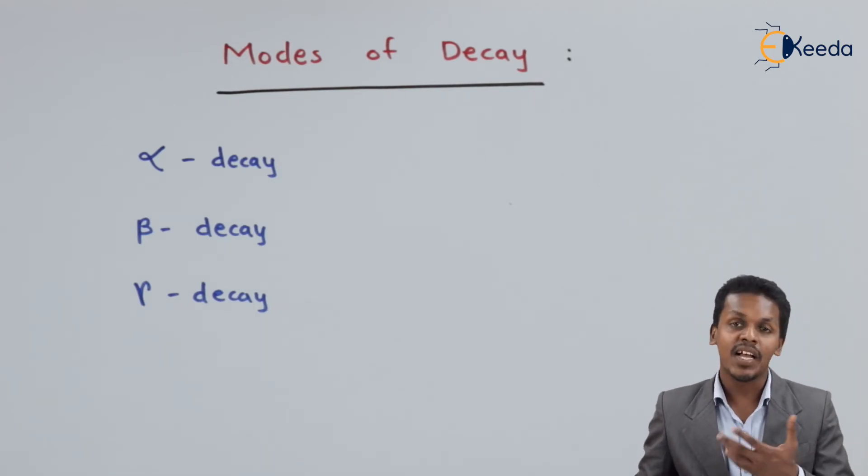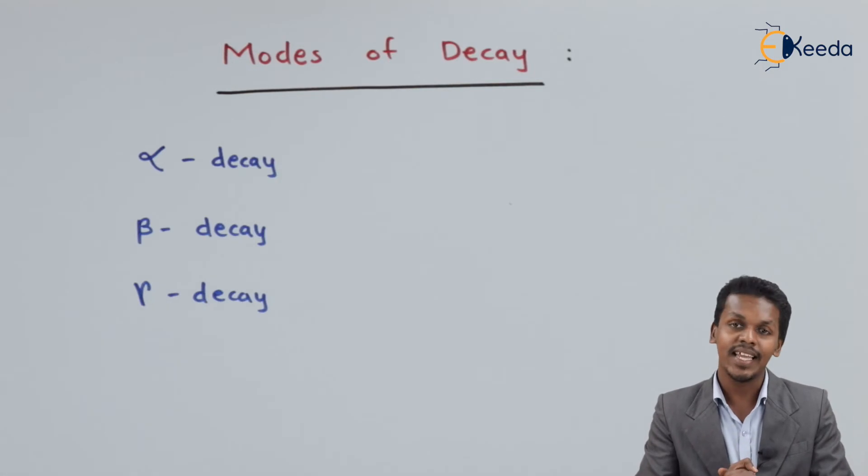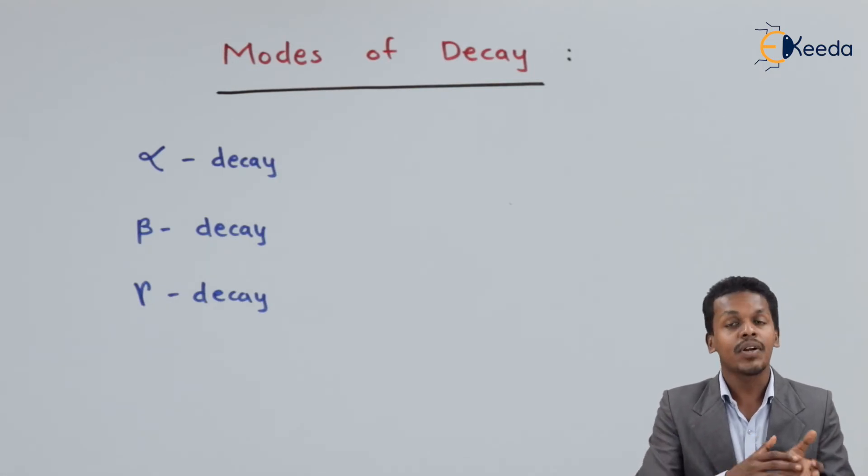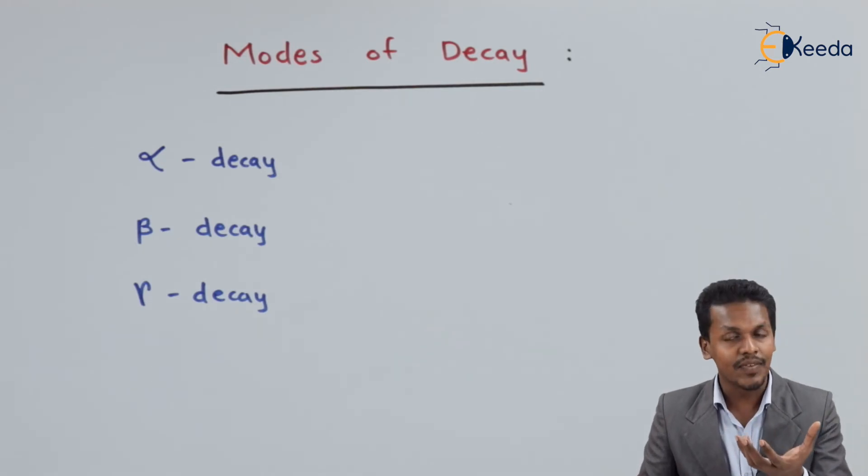Talking about gamma decay, this gamma decay is a combination of alpha as well as beta decay, in which the product formed after the decay of a particular radioactive element is basically unstable. That unstable product will give us the emission of gamma particles.